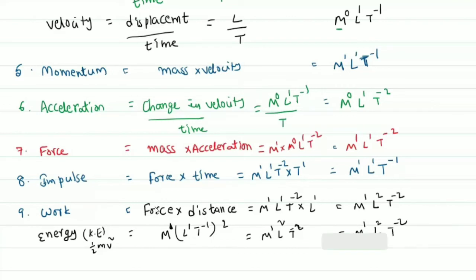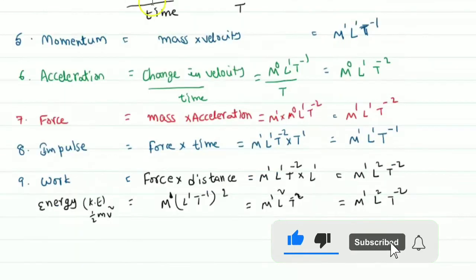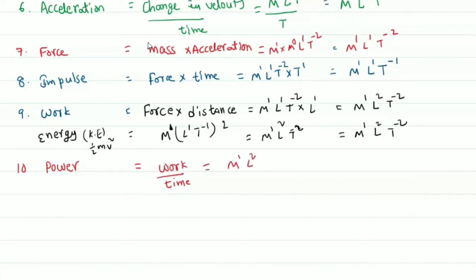Next is power. Power equals work done per unit time. Work has dimensions M power 1, L power 2, T power minus 2, divided by time T power 1, giving M power 1, L power 2, T power minus 3.